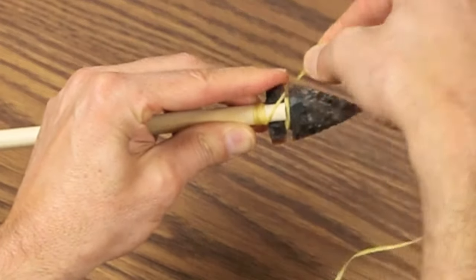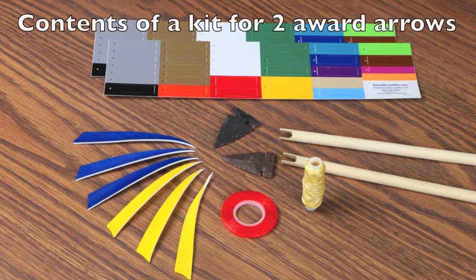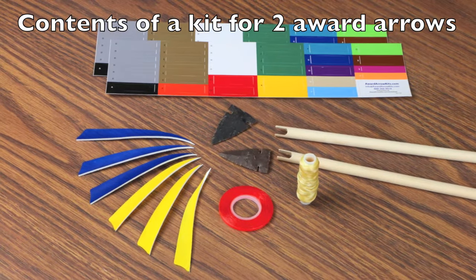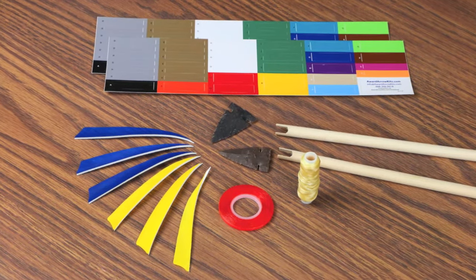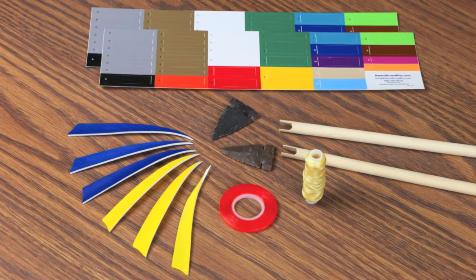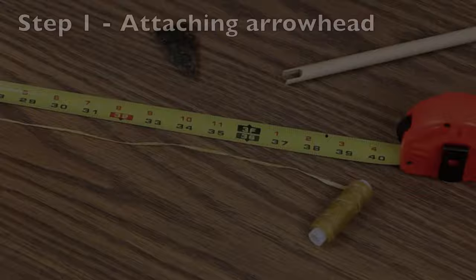This video provides step-by-step instructions for the assembly of an Arrow of Light ceremonial arrow from awardarrowkits.com. Its detailed directions will save you time and make the assembly process easy. These arrows are officially licensed by the Boy Scouts of America.